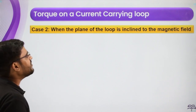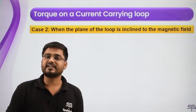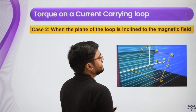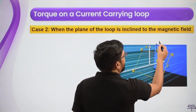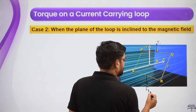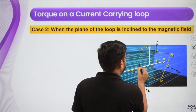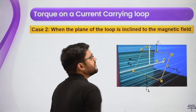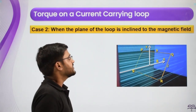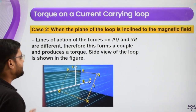The next case is when the plane of the loop is inclined at some angle to the magnetic field. In this case the same forces act: one upward (F1) and one downward (F1), and the two F2 forces. The sum of all forces is still zero. But is the torque zero? The answer is no.